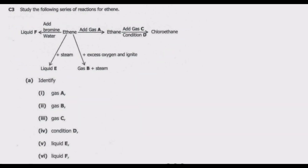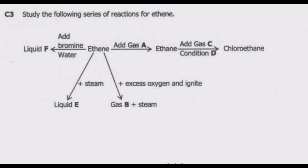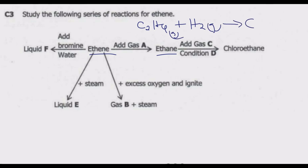Once we identify these gases, we can come back and answer the questions. Starting with A: ethene plus gas A gives us ethane. Alkenes undergo an addition reaction with hydrogen in the presence of a nickel catalyst to form alkanes. So gas A is hydrogen. The equation shows ethene reacting with hydrogen gas to give ethane.